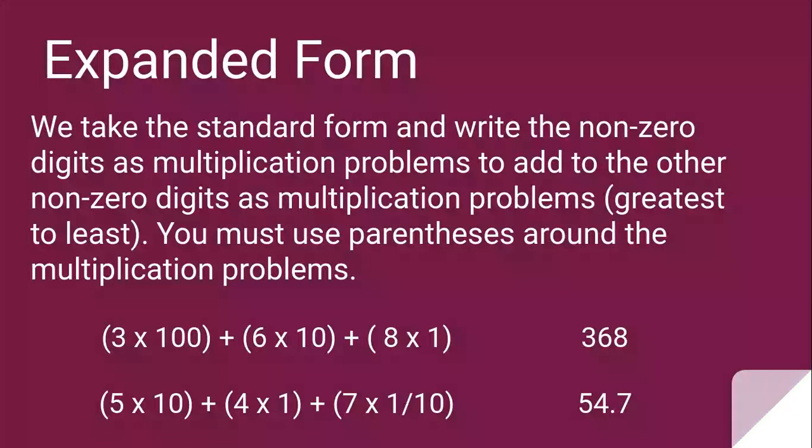The next one says in parentheses 5 times 10 plus in parentheses 4 times 1 plus in parentheses 7 times 1 tenth. Well, 5 times 10 is 50 plus what is 4 times 1? That's 4. So 50 plus 4 is 54. But 7 times 1 tenth. You're thinking, Miss Christ, what does that even mean? I don't know how to do that. Yes, you do.